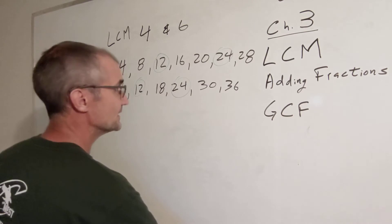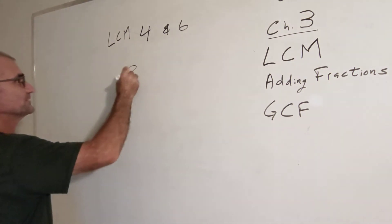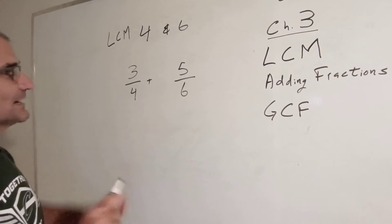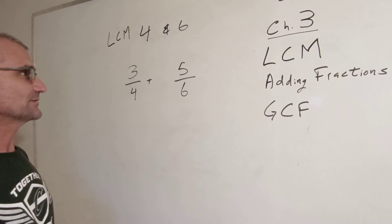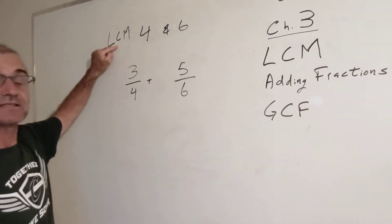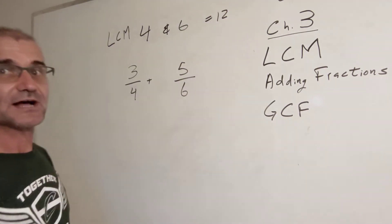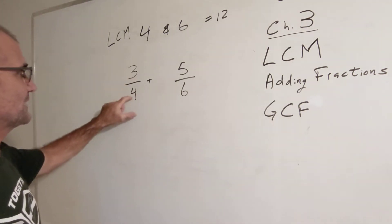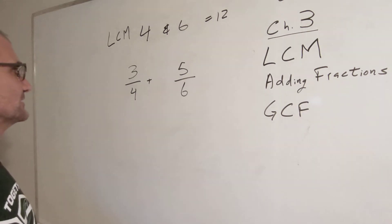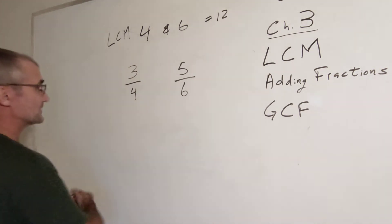So why is that important? Let's say I'm adding fractions — I want to add 3 fourths plus 5 sixths. When you add or subtract fractions, you have to have a common denominator. These are not common denominators, so you have to figure out what the common denominator would be. We found the least common multiple of 4 and 6 is 12, so that's going to be our common denominator. I've got to turn the denominator into a 12. I'll multiply by 3 over 3, which is equivalent to 1 so it doesn't change the value.